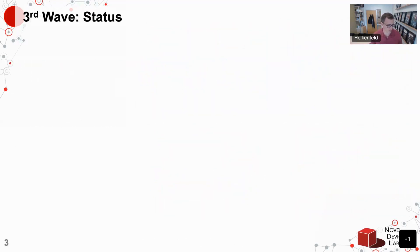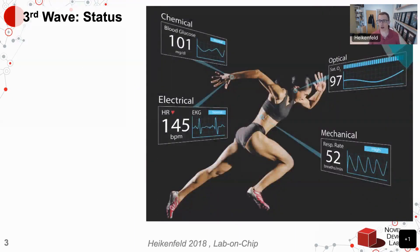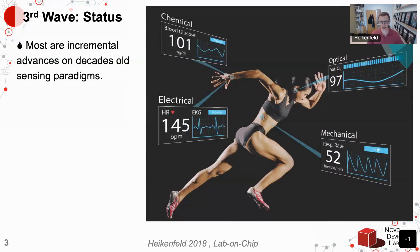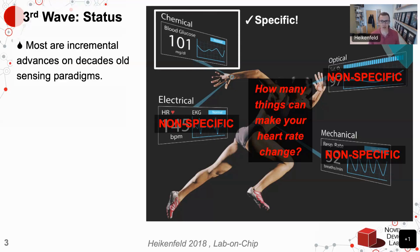What's the third wave status? Most third wave technology is things you'd find on an Apple Watch. Most of these technologies are just incremental advances on decades-old technology. The stuff in wearable devices was put on the Apollo astronauts in the 1970s — this is not new. The challenge with these measures — electrical, optical, mechanical — is that they're nonspecific. If you're measuring heart rate, how many different things can make your heart rate change? Are you excited? Are you having a heart attack? What is actually going on?